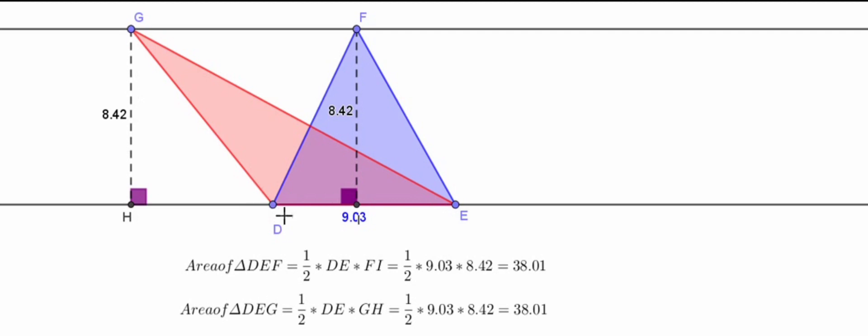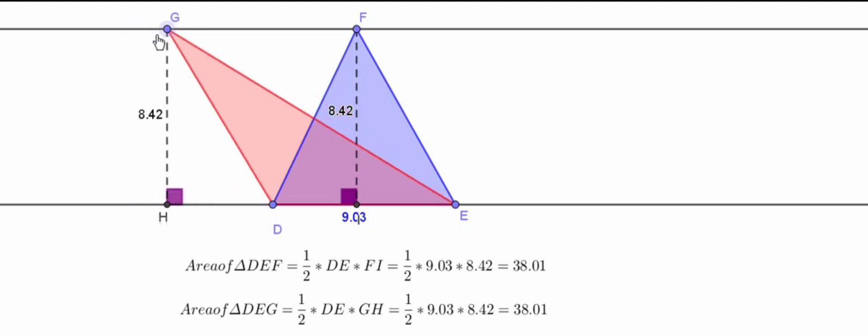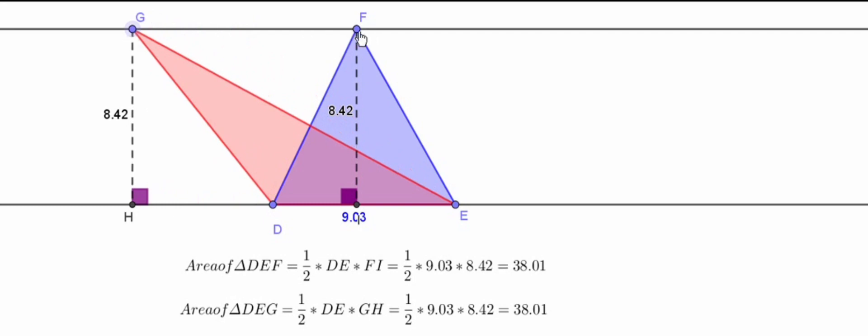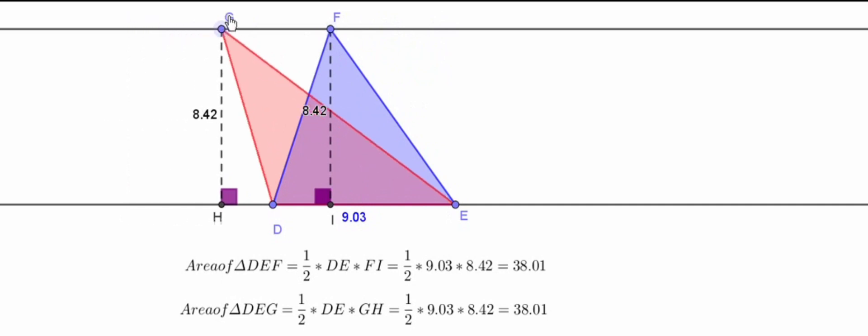One more point is to be remembered here. That is altitude of an obtuse angle triangle lies in the exterior, whereas altitude of an acute angle triangle lies in the interior. That is what is very clearly shown here in the triangles. For blue triangle it is inside. Even when the angle is made acute here in the pink triangle, the altitude is coming into the interior. Otherwise it is in the exterior.